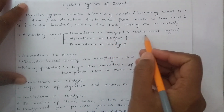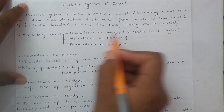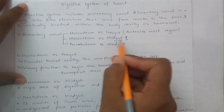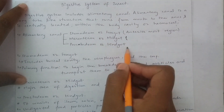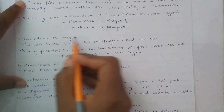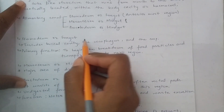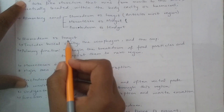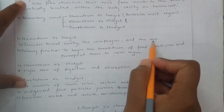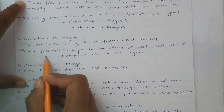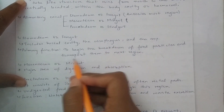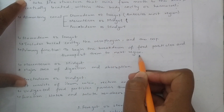In the foregut, we have an anterior region called stomodium. In the midgut, we have mesenterone. In the hindgut, we have proctodium. The stomodium or foregut includes the buccal cavity, esophagus, and crop. Its primary function is to begin the breakdown of food particles and transport them to the next region.